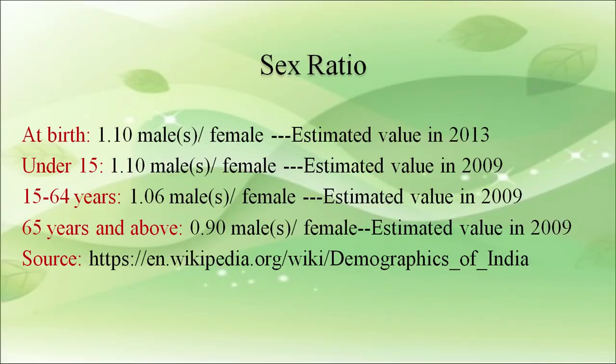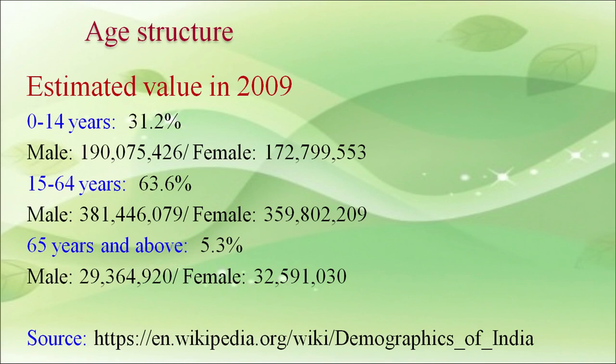Sex ratio figures are shown in this slide. The estimated values for 2009 are: 1 to 14 years — 31.2 percent, 15 to 64 years — 63.6 percent, and 65 years and above — 5.3 percent. These sources are taken from demography of India, human population, urbanization, and environment.